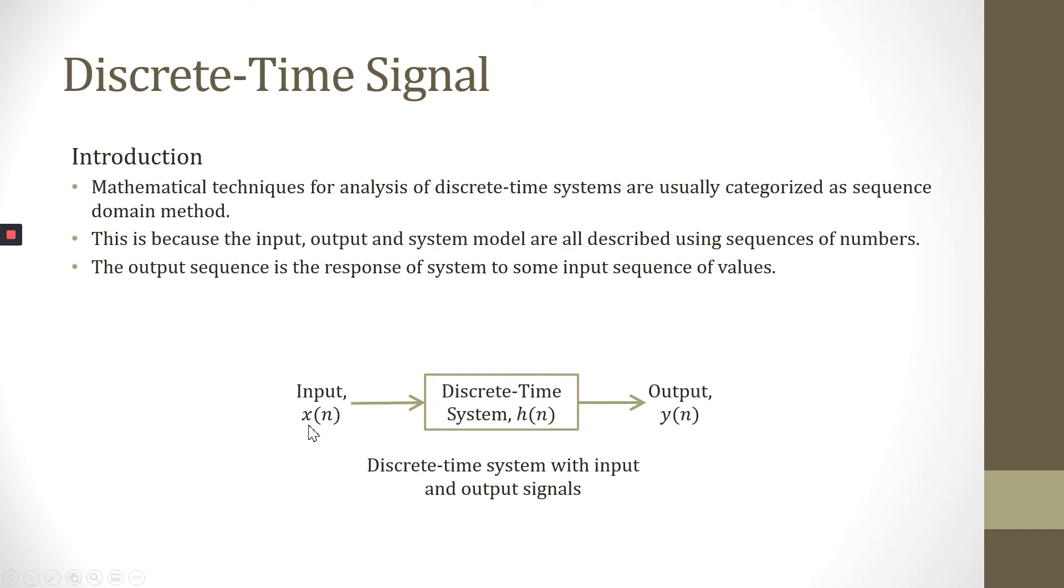Discrete time signal can be represented by symbol x in bracket n, where n is an integer, for example, 0, 1, 2, 3, and so on.